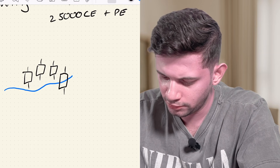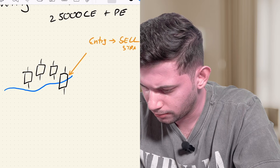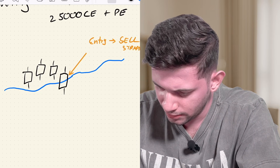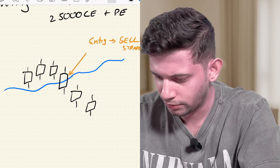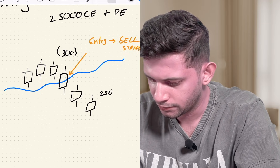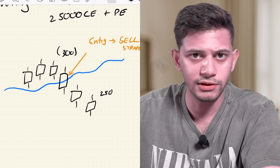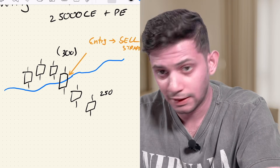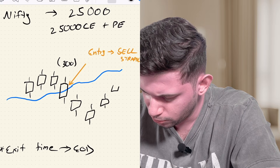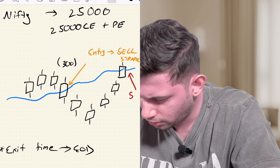The strategy says whenever the candle goes below the VWAP line, we will enter — so here is where we'll enter. This means you sell the straddle: the 25,000 call and 25,000 put. As the VWAP moves and the candles go down, the straddle is losing value. If it was at 300 at entry, now it might be around 250, so you've made around 50 points. The exit condition is either end of day at 3:15 PM, or if the price crosses back above the VWAP line — that becomes your stop loss.